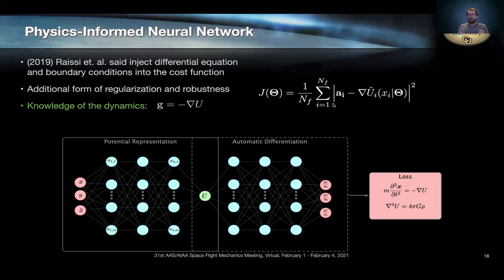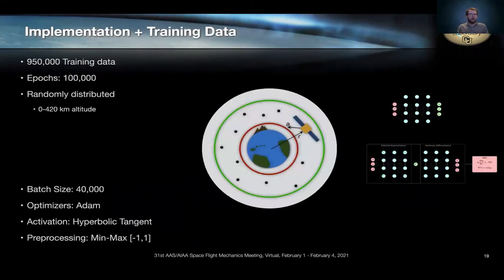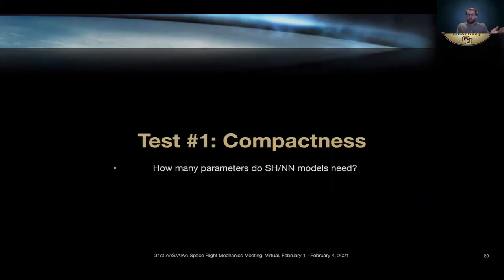So that's a really powerful technique. And I want to compare its performance to spherical harmonics. So to do that, I trained both of these networks, the traditional and the physics-informed networks, on about 100,000 data points that are randomly distributed between that circumscribing sphere of Earth and a LEO altitude at about 420 kilometers. And I put it to the test.